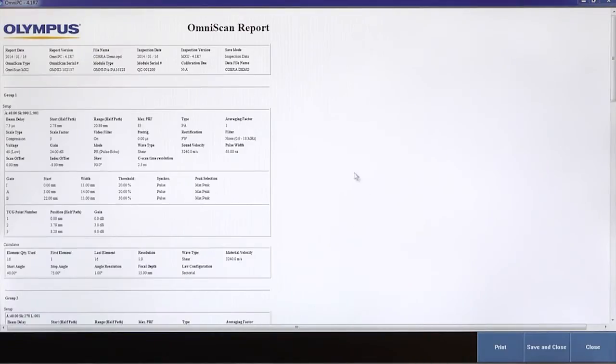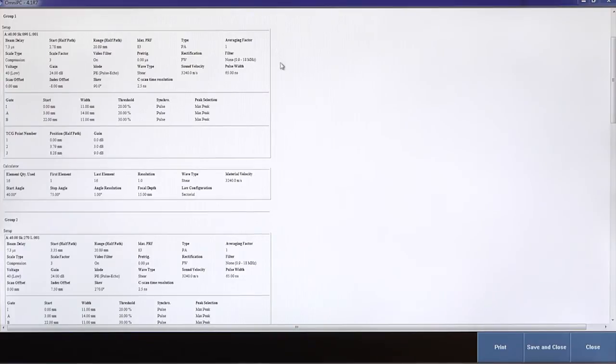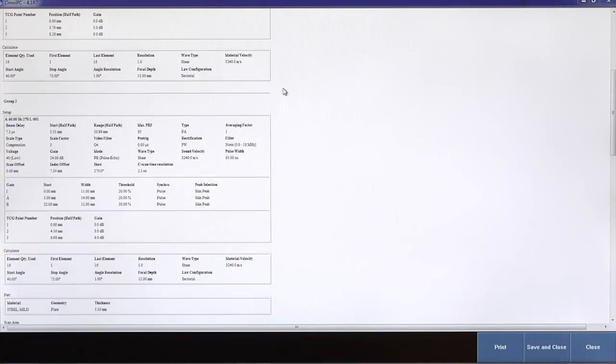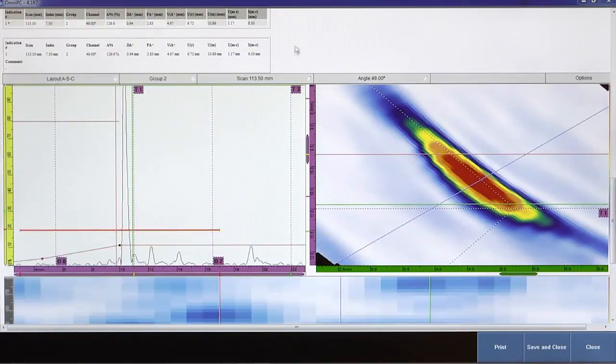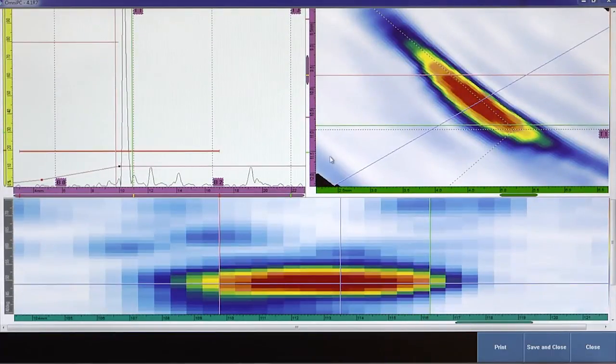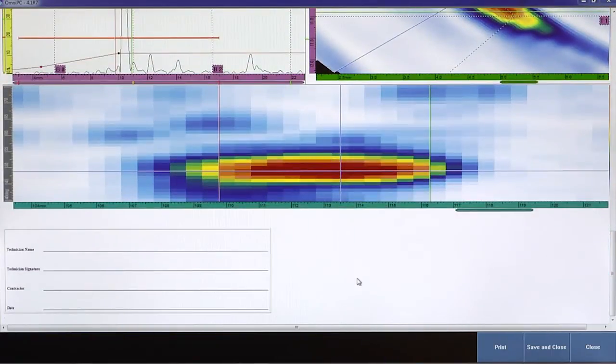From the report menu, information regarding the OmniScan, the calibration and the software, the setup and phased array setup for each group, the component and scanner information, and inspection results to include the statistical readings and a screenshot of the flaw. The report can be printed directly from here or saved and closed.